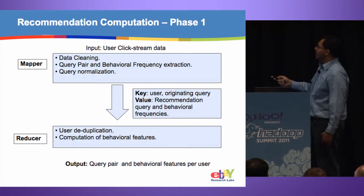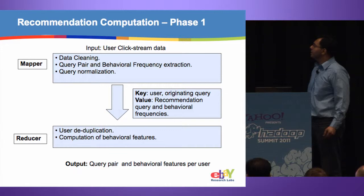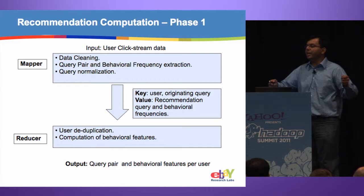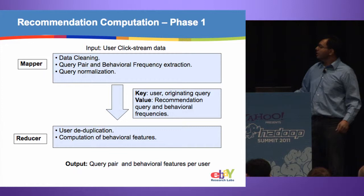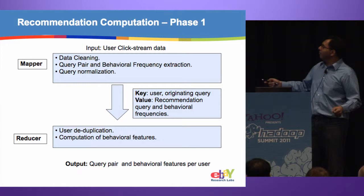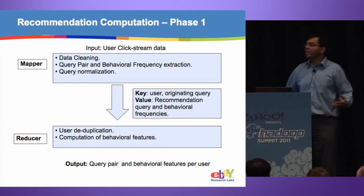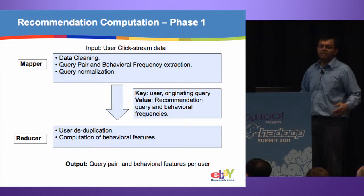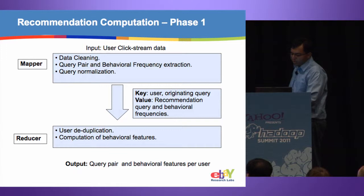In the first MapReduce job, the input is sessionized data. Mappers clean the data and normalize it — treating synonymous queries and merging recommendations — to produce query transitions with scores such as click frequency and purchase frequency. In the reducer, we do user deduplication so a single user casts only one vote, and we compile features, combining views, purchases, and other information into a single score using linear combination based on regression coefficients. The output is query pairs with scores.